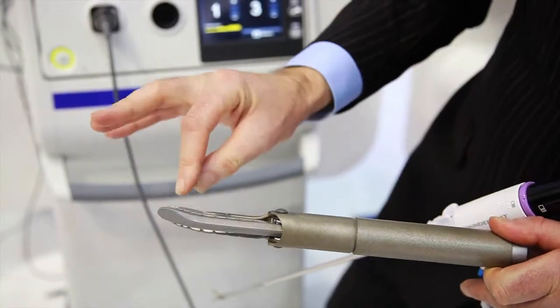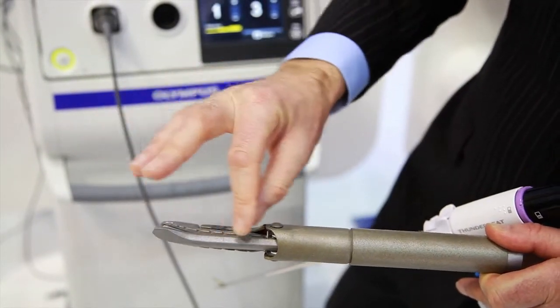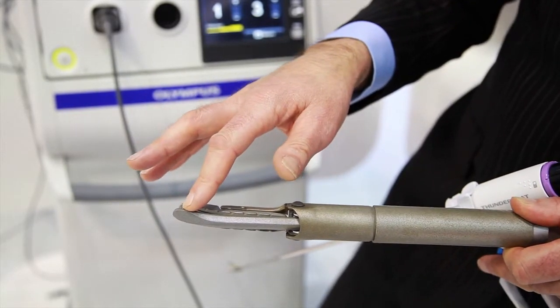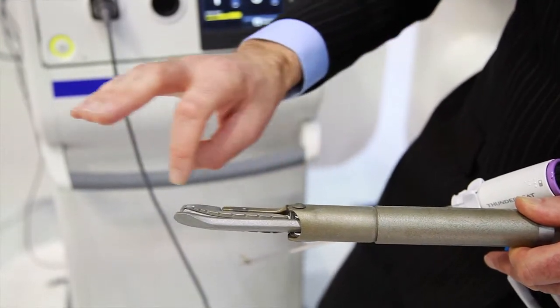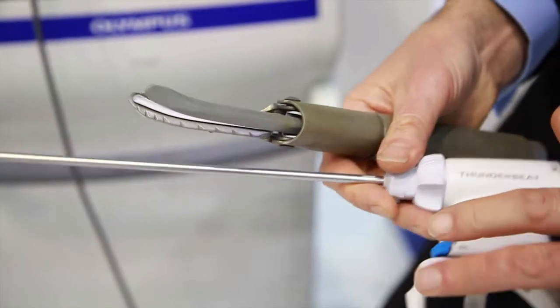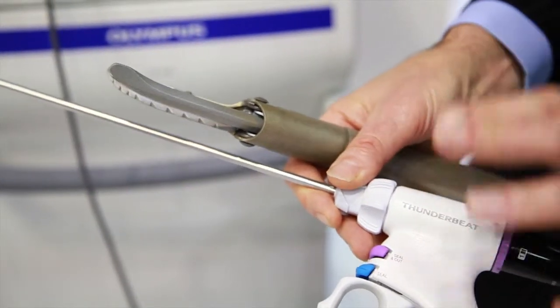As the jaws close, the energy travels from this jaw to this jaw, sealing the tissue. And this blade here oscillates at 47,000 times a second and cuts the tissue with ultrasonic energy. This is currently the fastest device on the market and has a 7mm vessel sealing claim.